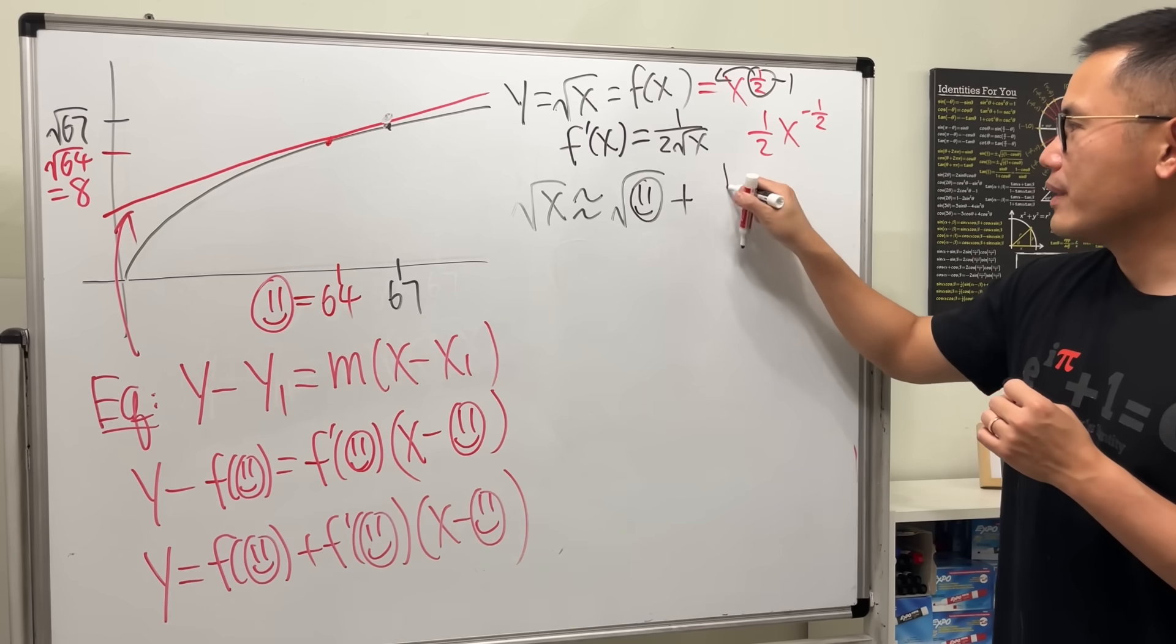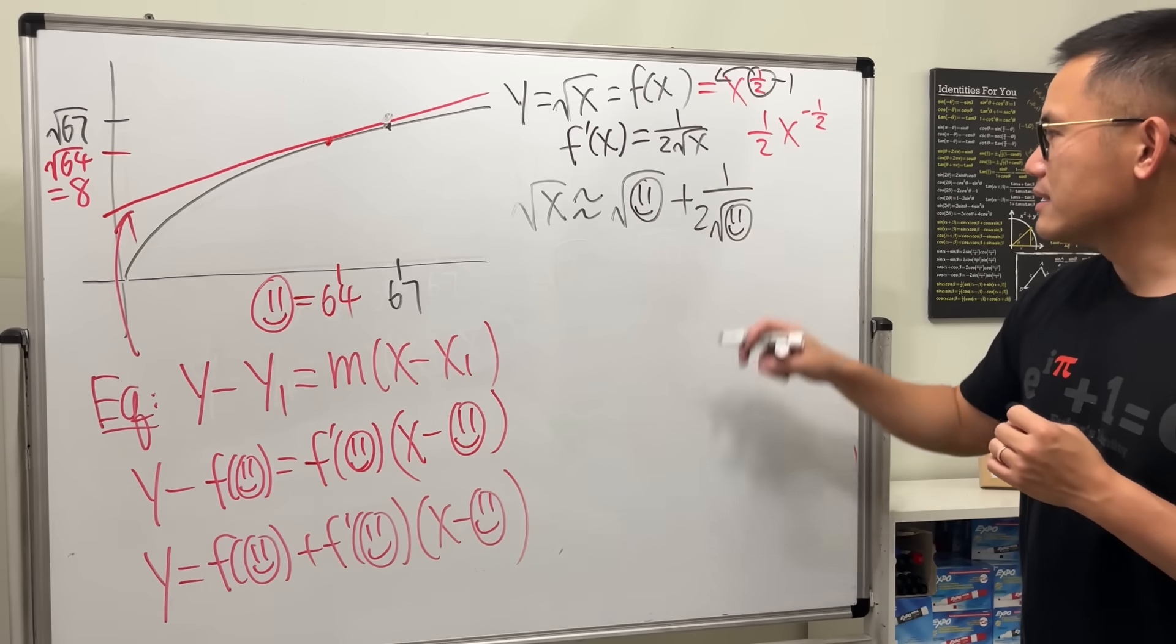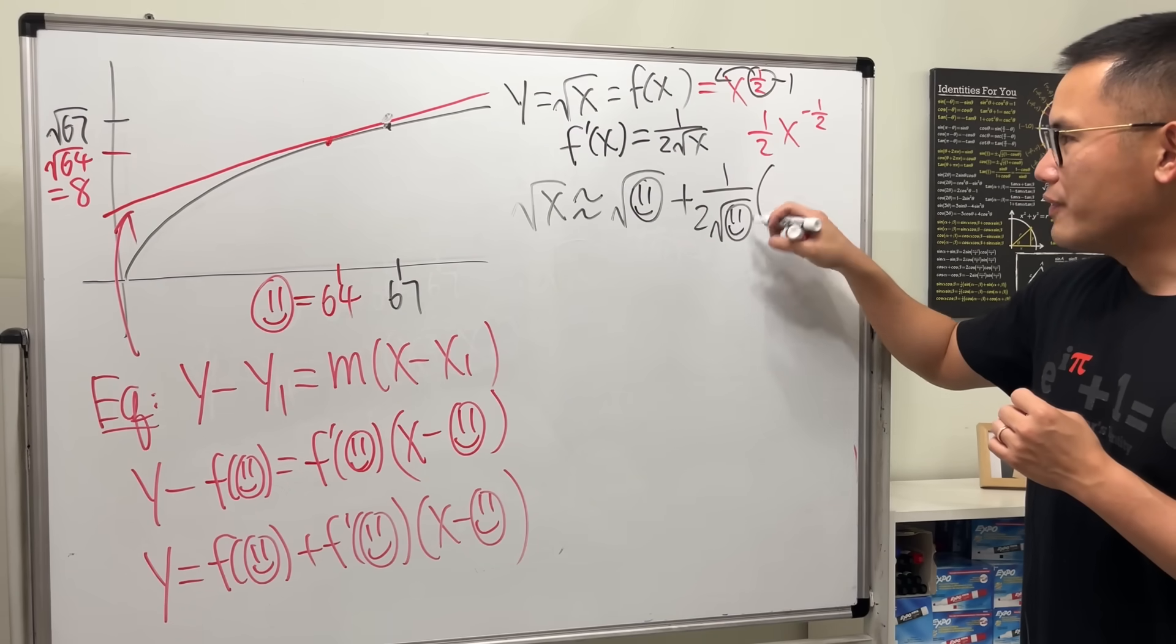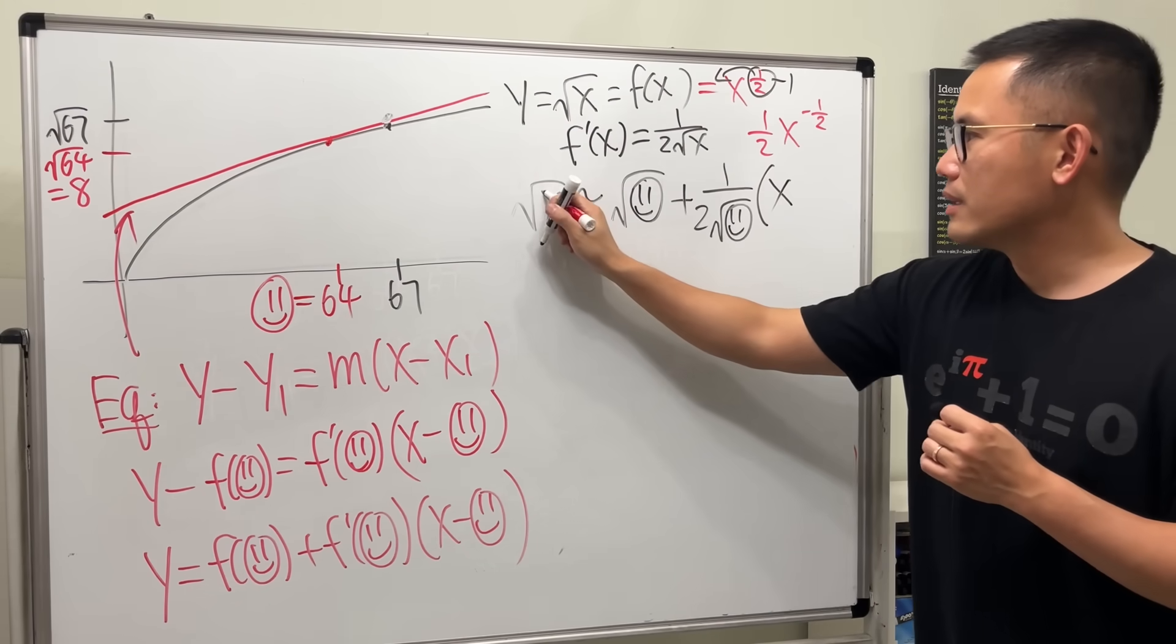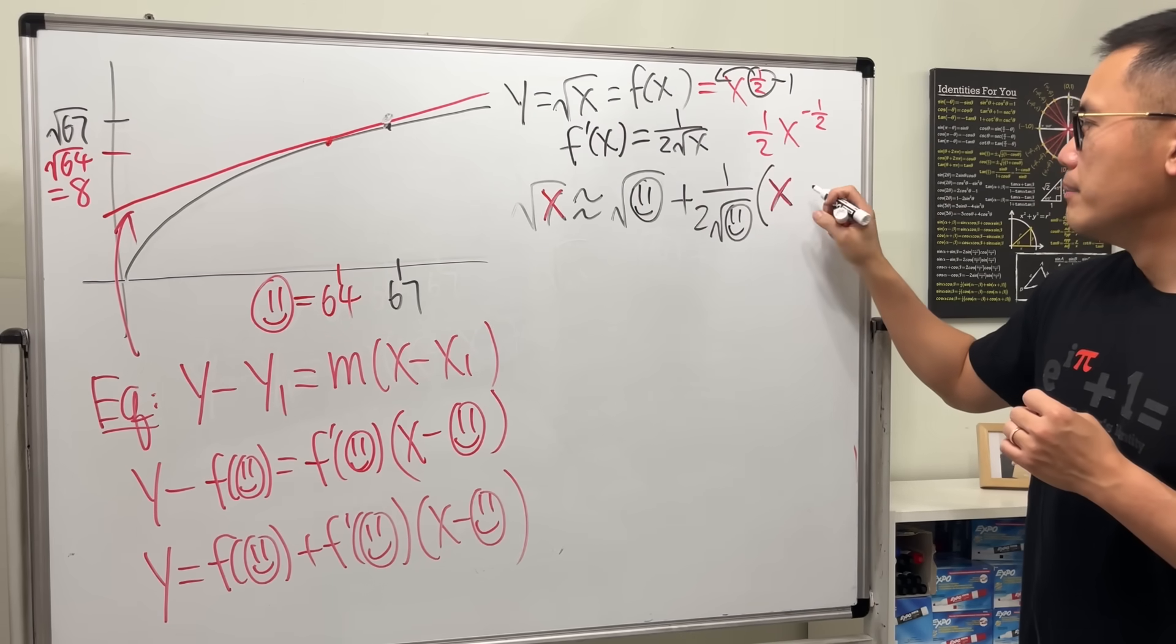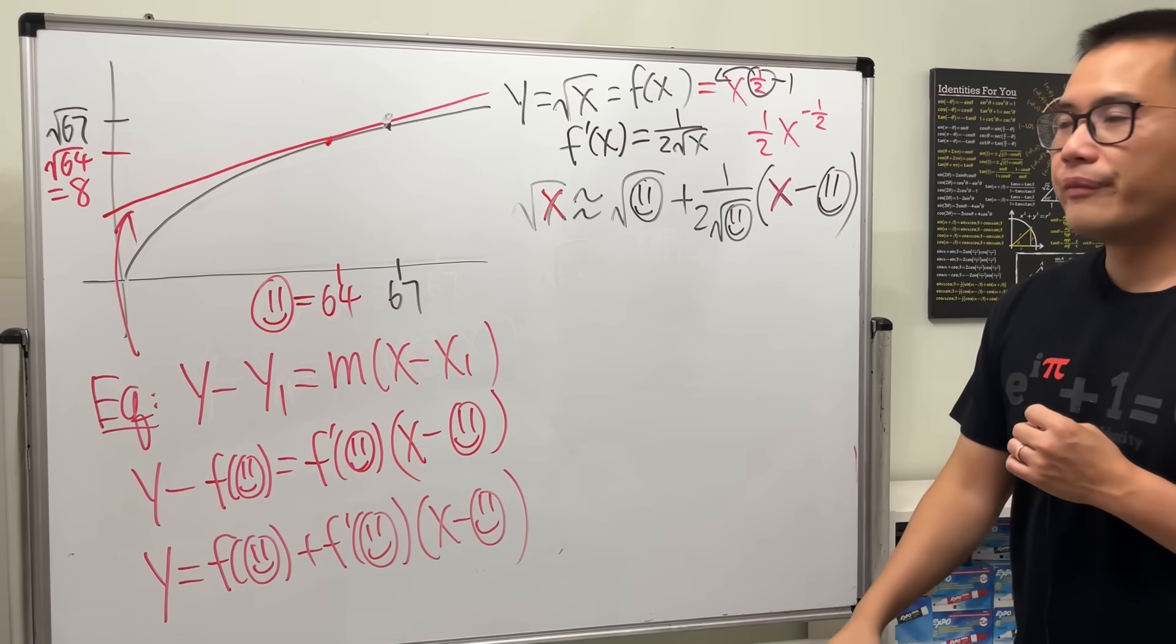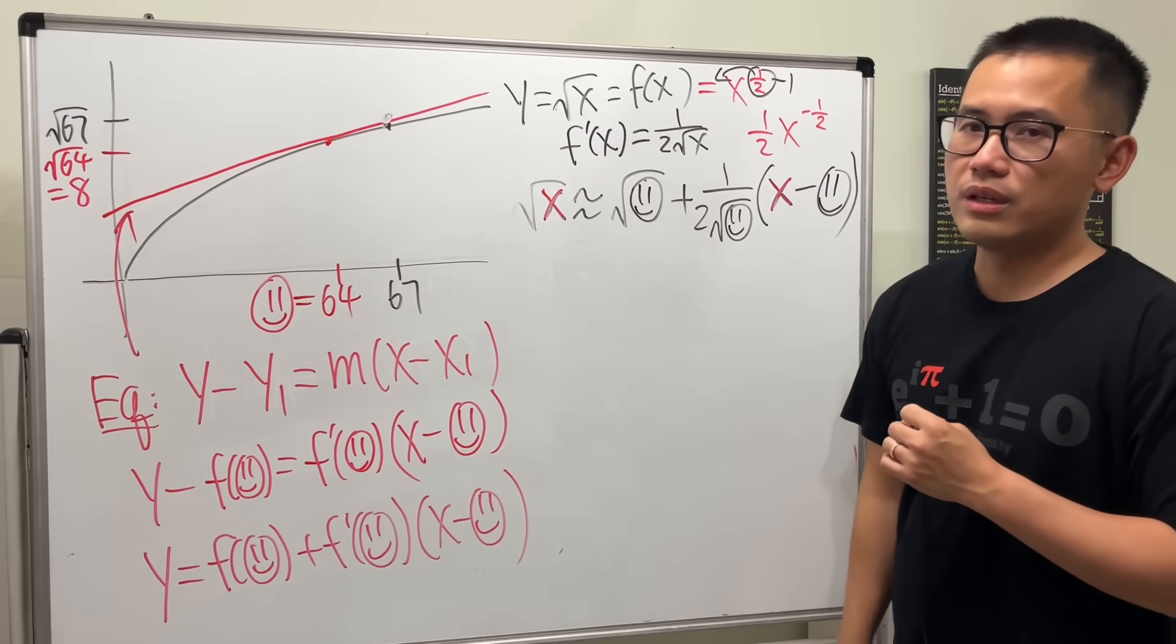So we have the 1 over 2 square root of the happy face here. And then lastly, just multiply that by whatever the x value that you want, right? Whatever the x value that you want right here minus the happy face value that you have. So, that's exactly what we did earlier.